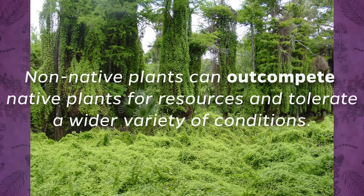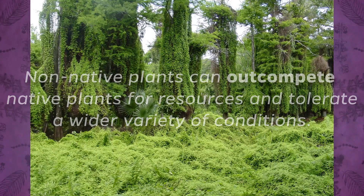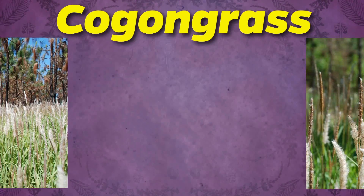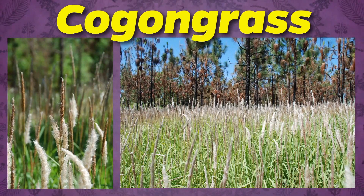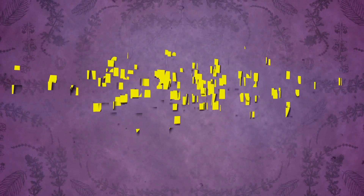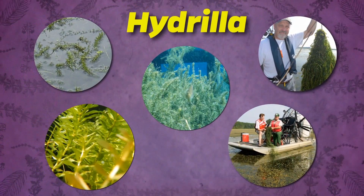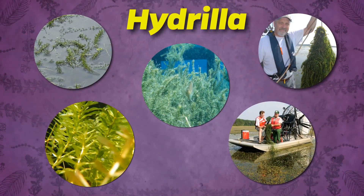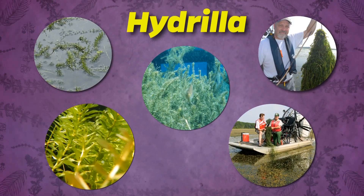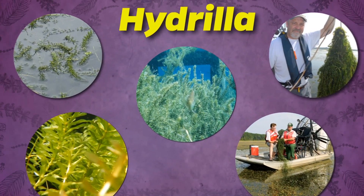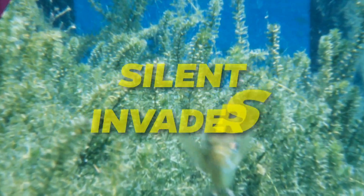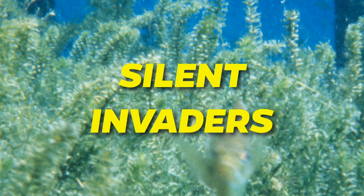Non-native plants can become invasive when they out-compete native plants for resources, or are able to tolerate a wider variety of habitat conditions. Kogan grass, invasive in the southeastern U.S., can tolerate a wide range of conditions — for example, it can grow in many different types of soils. Because hydrilla can grow in both low and high nutrient conditions, and with even just 1% of full sunlight, it is able to thrive in places like reservoirs that don't normally support plant growth. Instead of many different kinds of plants, we could end up with just a few silent invaders.